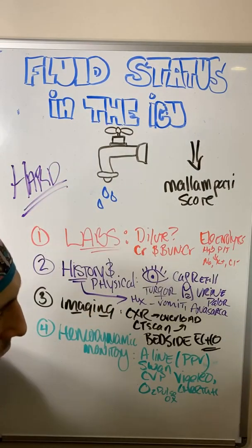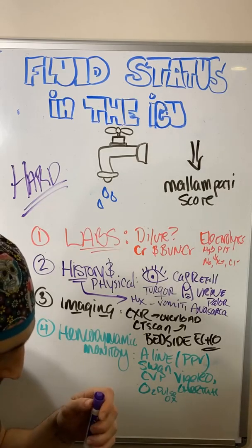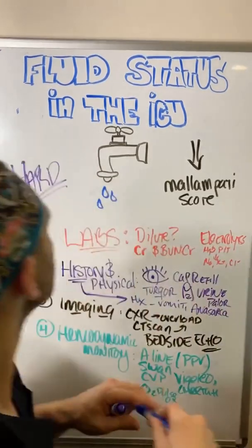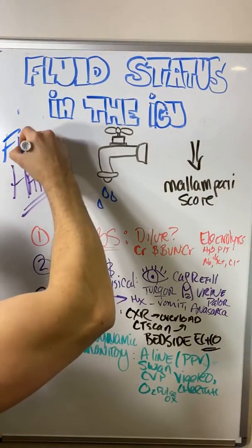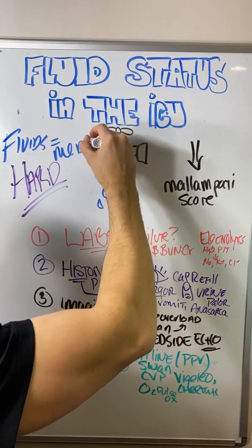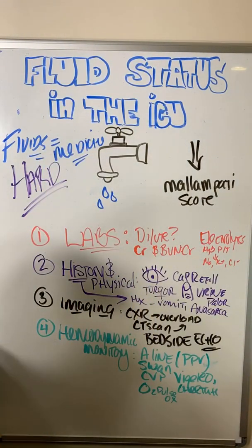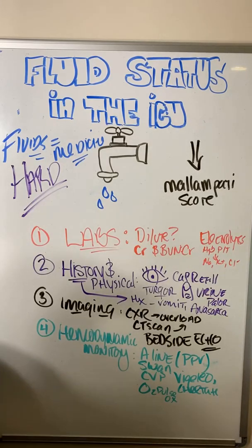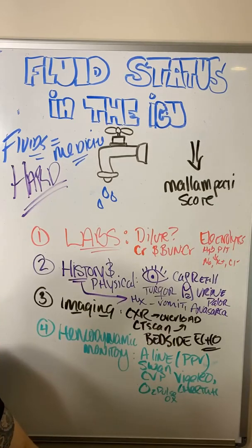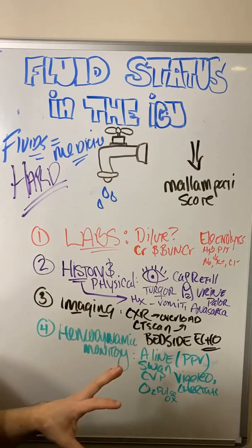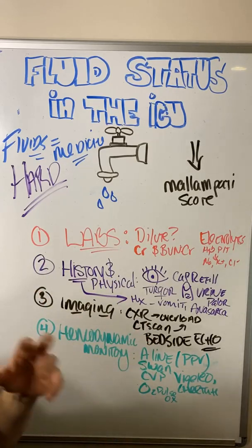There is some art to this, and one important point is that fluids equal medicine. Fluids have electrolytes, sodium, and volume. Volume overload has worse outcomes in the ICU and in the hospital in general. Anytime you give patients fluids — whether LR, normal saline, blood products — it has ramifications. Understanding volume status and knowing what you're going to do with it is so, so important.